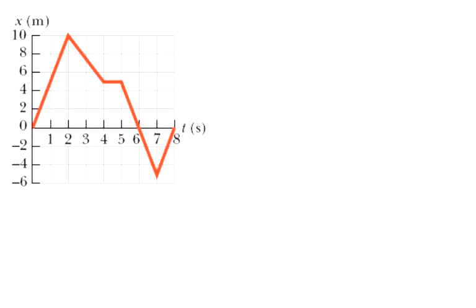This question says a graph of position versus time for a certain particle moving along the x-axis is shown in the figure below. Find the average velocity in the following time intervals. So it's going to give us some time intervals.